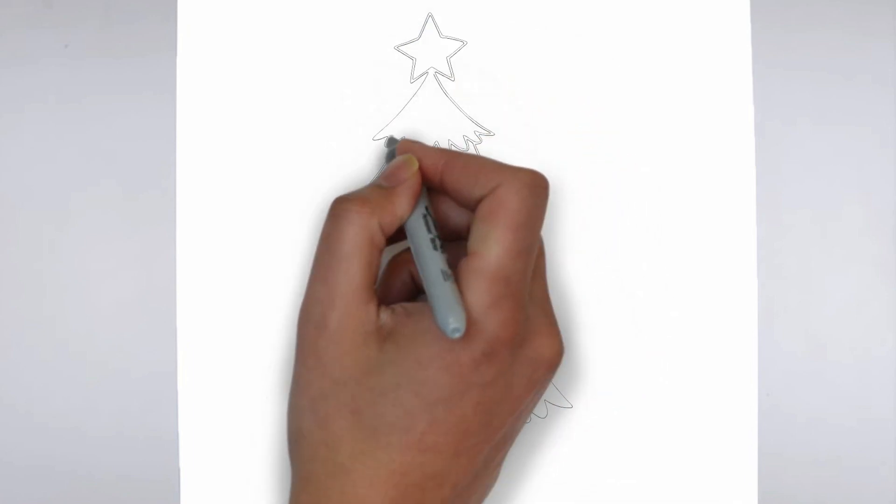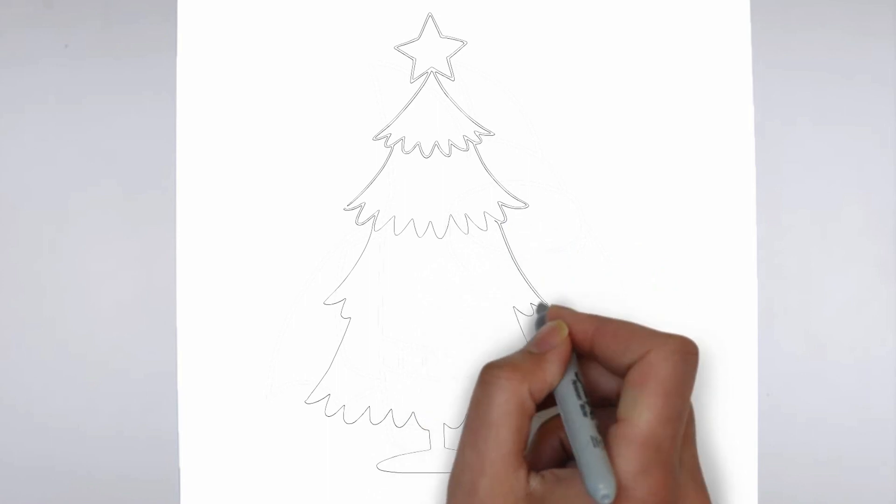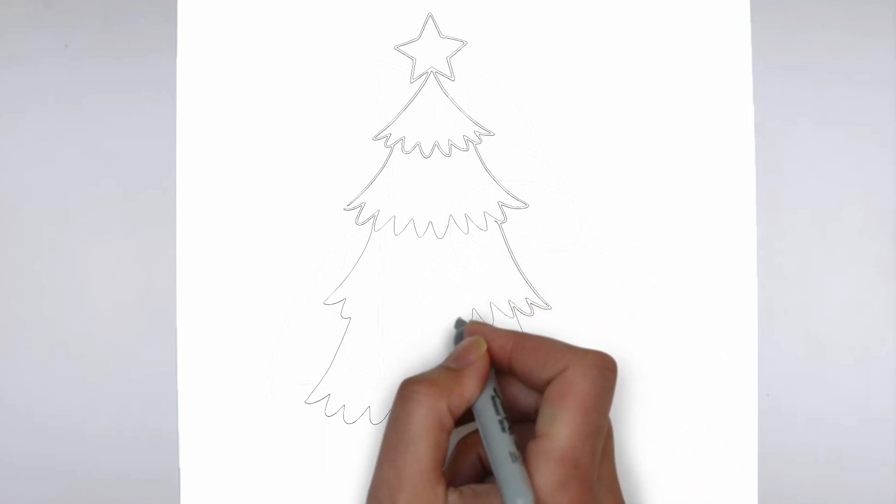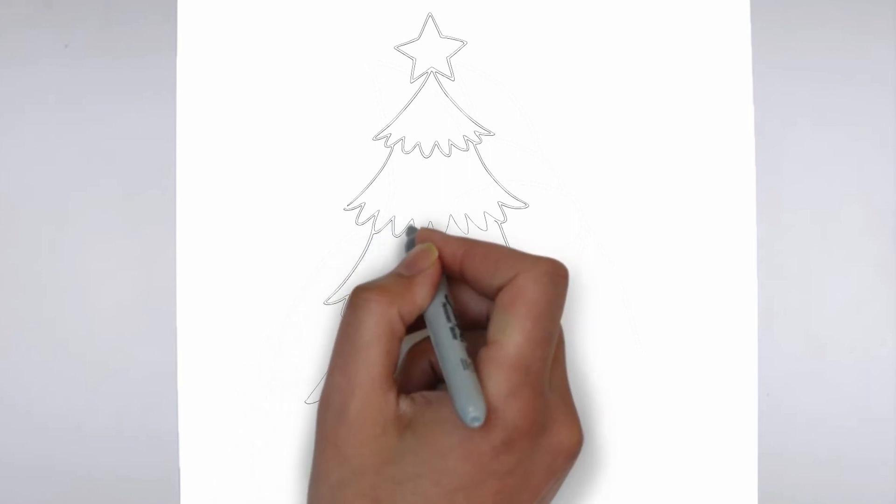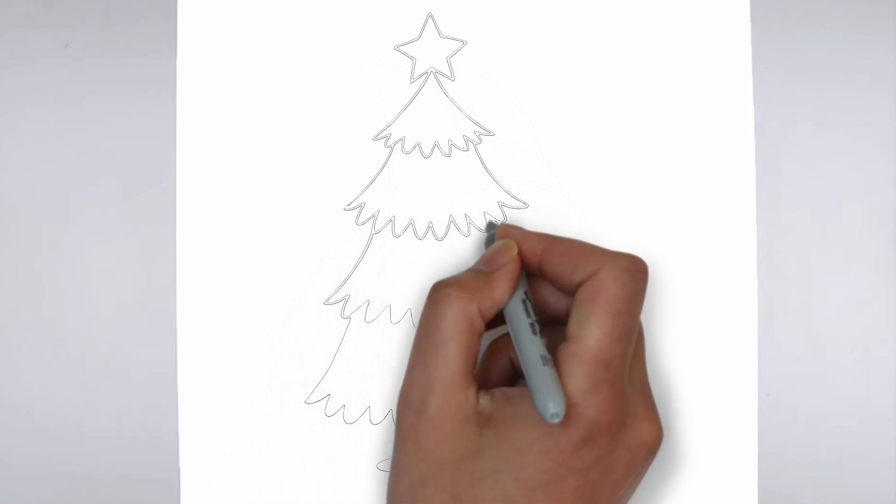As you continue to add in more details, remember to keep your strokes light and controlled. You can always go back and darken lines later, but it's harder to erase mistakes if you've applied too much pressure from the start.